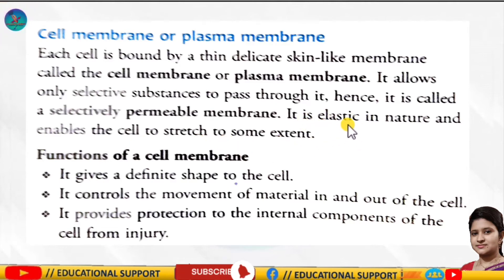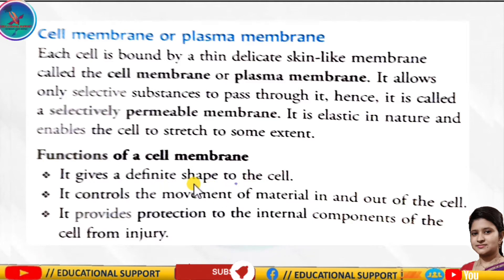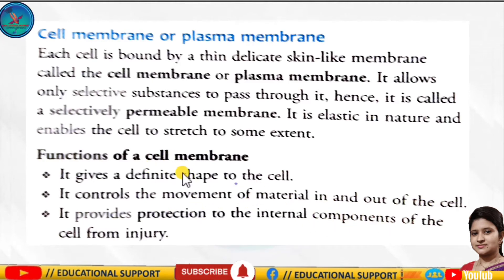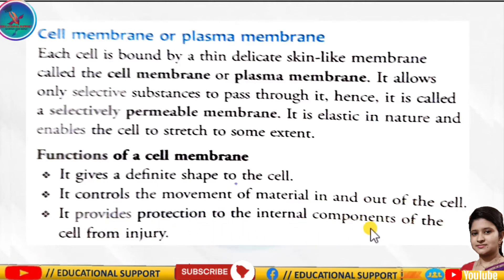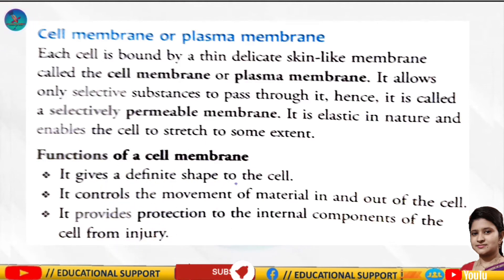The functions of the cell membrane are: first, the cell membrane gives a defined shape to the cell — very important. Second, the cell membrane controls the movement of materials in and out of the cell. Third, the cell membrane provides protection to the internal components of the cell from injury.